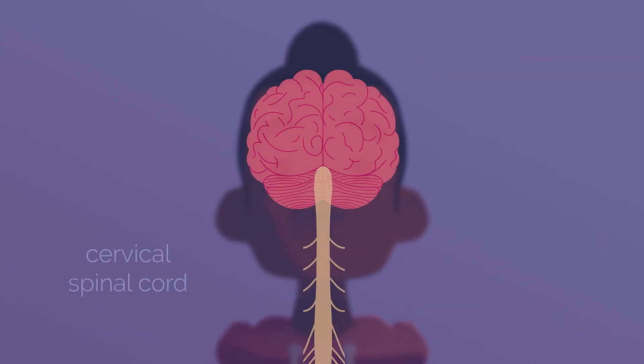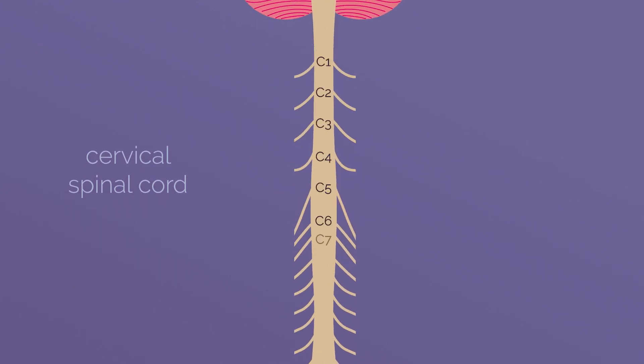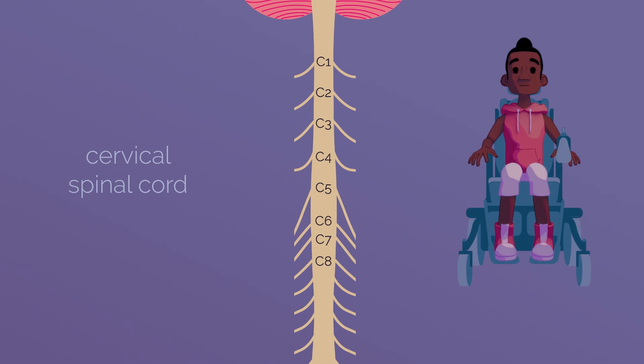The cervical region of the spinal cord is at the neck. This region is divided into eight levels, C1 to C8. Injury to this region results in paralysis of the legs in addition to the arms.